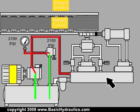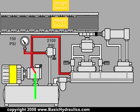The manifold is a block of metal with internal passageways drilled through it. Those passageways simplify the plumbing of the return line and the pressure line.